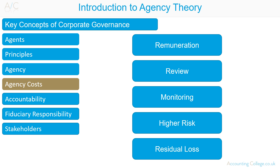Residual loss is an agency cost which relates to the cost of directors furnishing themselves with benefits over and above their remuneration package. For example, a director using company cars and so forth. These are direct costs to the principal.